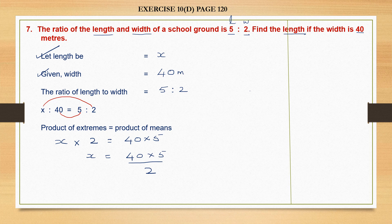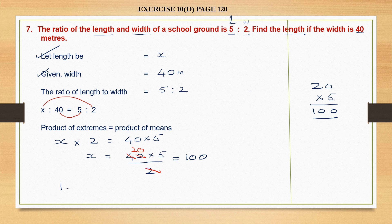Now I can cancel 2 and 40. 2 into 20 is 40, so let's multiply 20 into 5. 5 zeros are 0, 5 twos are 10, so I have 100. x is equal to 100. And what is x? X is the length. So we have got the length of the school ground to be 100 meters.